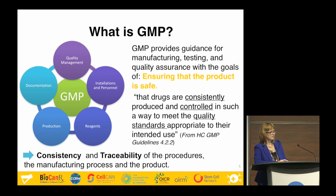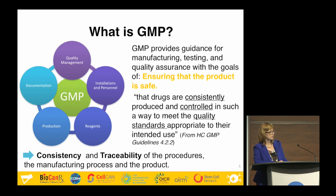The important thing here is that intended use is mentioned. Because every product and every therapy is different, it is taken into account what product you are making for which therapy to see what quality standards are applicable for your case. In the end, consistent production and the traceability — all the documentation you do — will make the manufacturing process a good process, and you will have no problems being approved by Health Canada for your clinical trial.